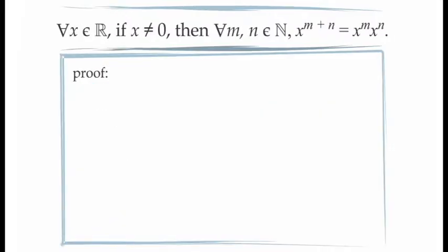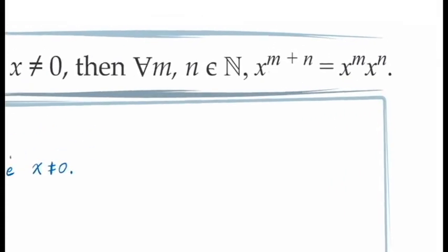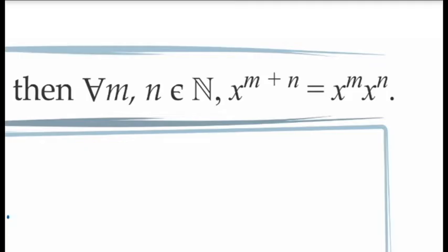Next, let's look at another well-known property of exponents. This property says for all values of x in the real numbers, if x is not equal to zero, then for all values of m and n in the natural numbers, x to the exponent m plus n is equal to x to the exponent m times x to the exponent n. We begin the proof by letting x be an arbitrary value in the real numbers and assuming that x is not equal to zero. We see that we have two natural numbers, m and n, involved in our expression, and we're trying to prove that our formula holds for all values of m and n.